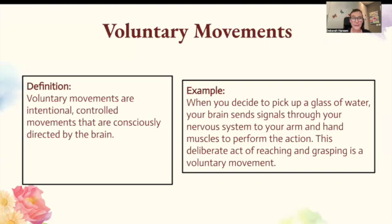Voluntary movements are intentional, controlled movements that are consciously directed by the brain. When you decide to pick up a glass of water, your brain sends a signal through your nervous system to your arm and hand muscles to perform the action. This deliberate act of reaching and grasping is a voluntary movement.